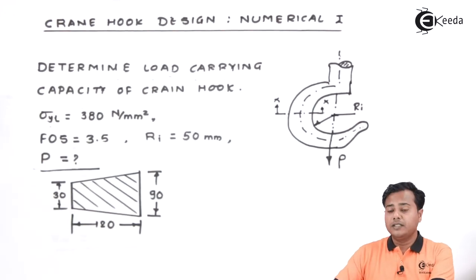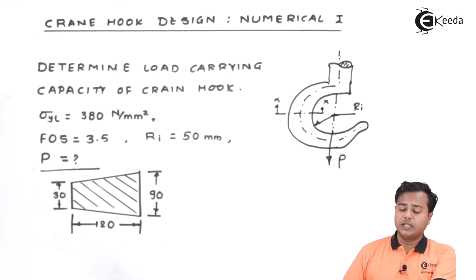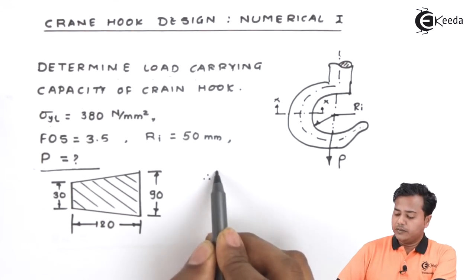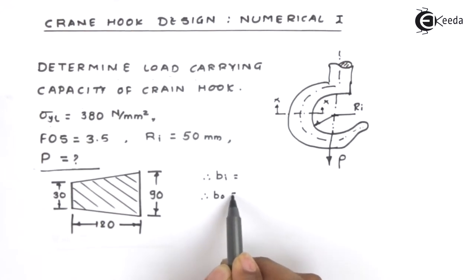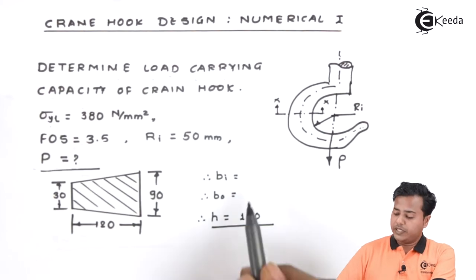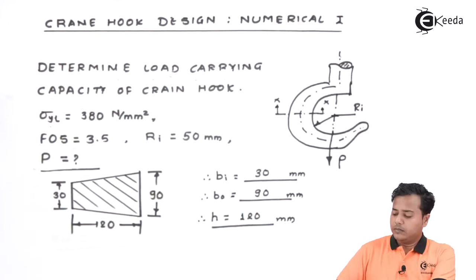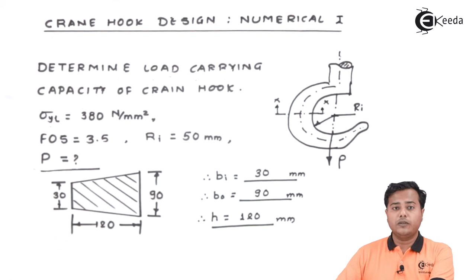So, this is what the numerical is and this is how the crane hook is given. The cross section for this particular case given is a trapezoid with the given dimensions. So, let us recall them quickly. Dimension h is 120 here. So, with this we need to find out. Let us proceed.